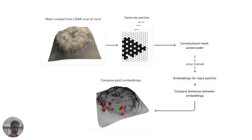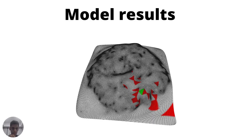This is the base overall flow: we take the mesh after making it semi-regular, generate the patches, and once trained, we get representative embeddings for the patches learned through the latent space of the autoencoder and compare distances between these embeddings on the surface of the coral itself. The results look something like this, where the green patch is the query patch and the top 20 similar patches are highlighted in red on the coral surface.